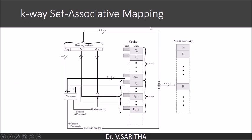K-way set associative mapping means K is the number of blocks in one set — it indicates there are K blocks per set. The cache is organized as sets, each having K blocks. The main memory address is divided into 3 fields: tag, set, and word.